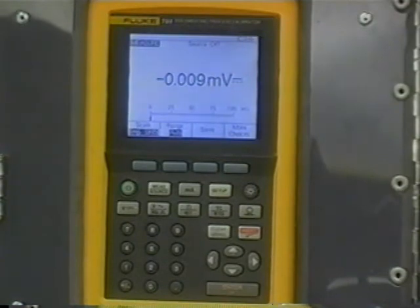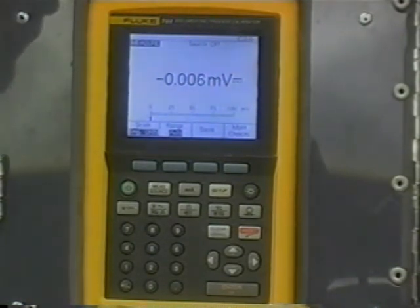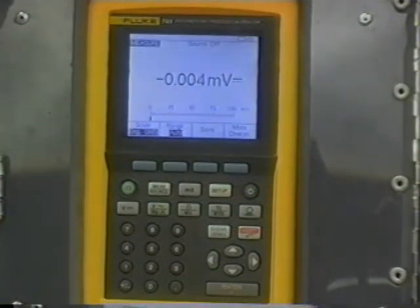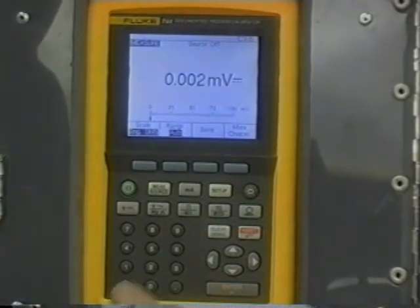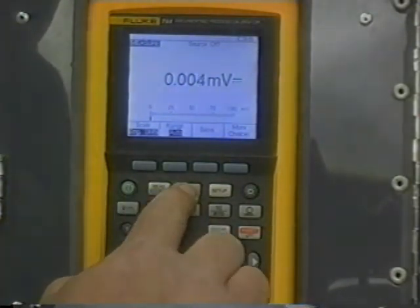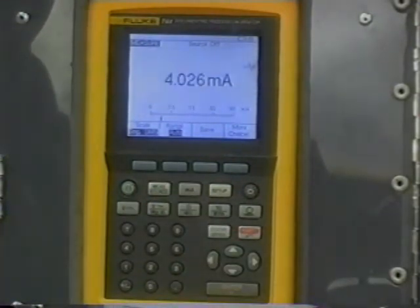After powering up the loop, we want to make sure that it's working properly. So a good way to do that is to check and make sure that we have a milliamp signal. We're using a Fluke 744 documenting process calibrator. So what we're going to do is we're going to measure milliamps.